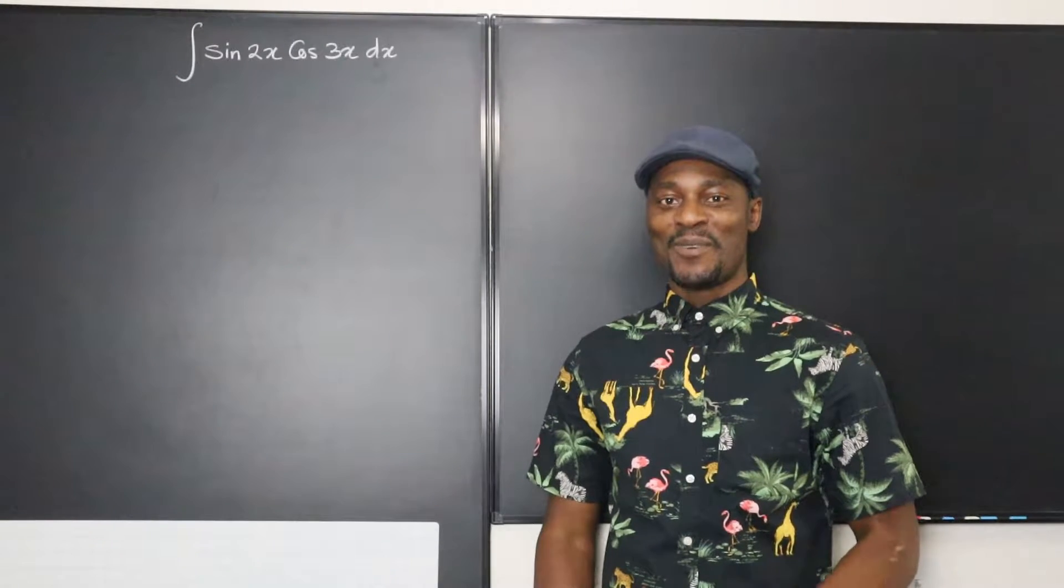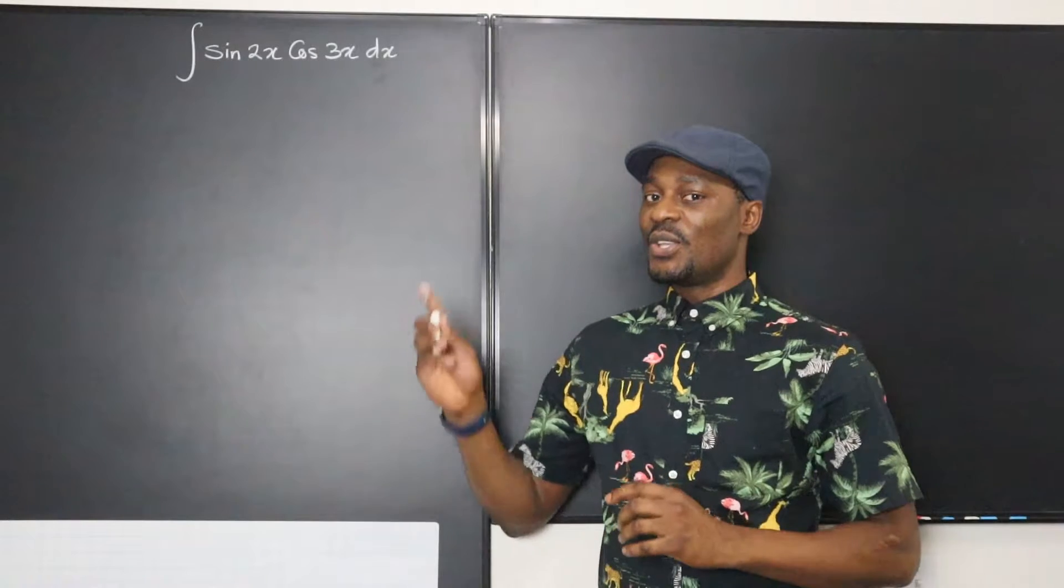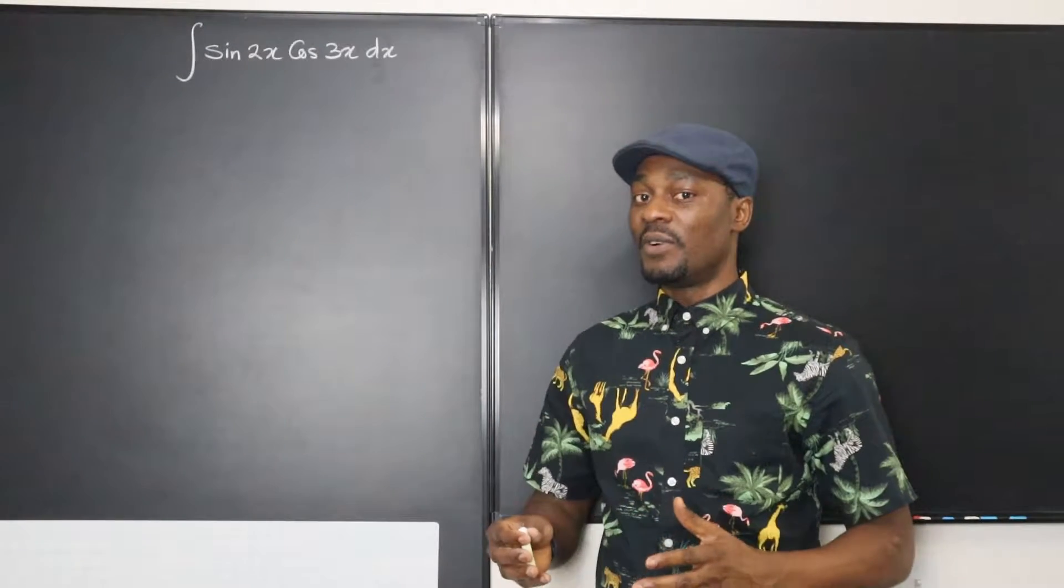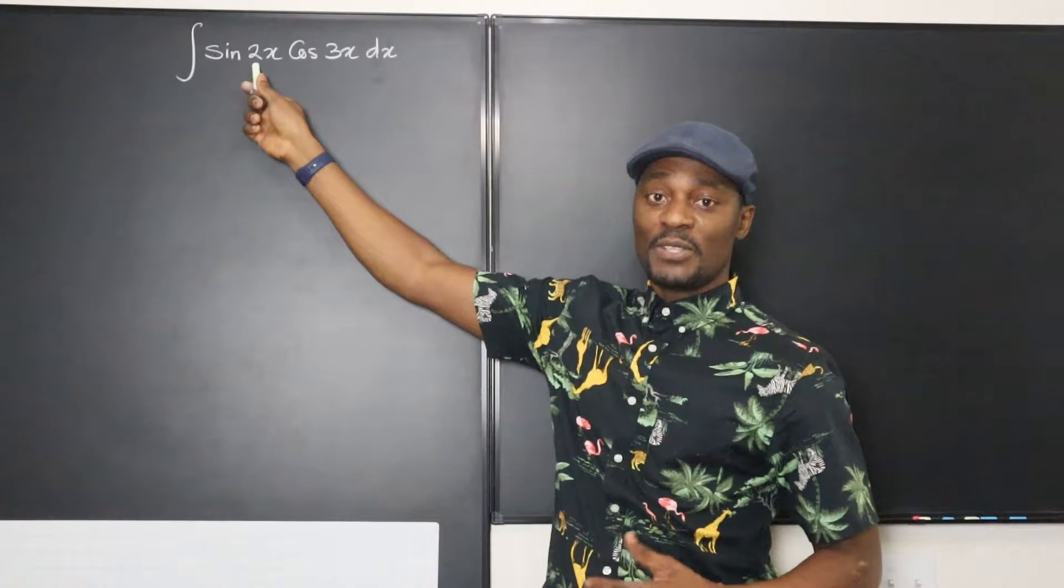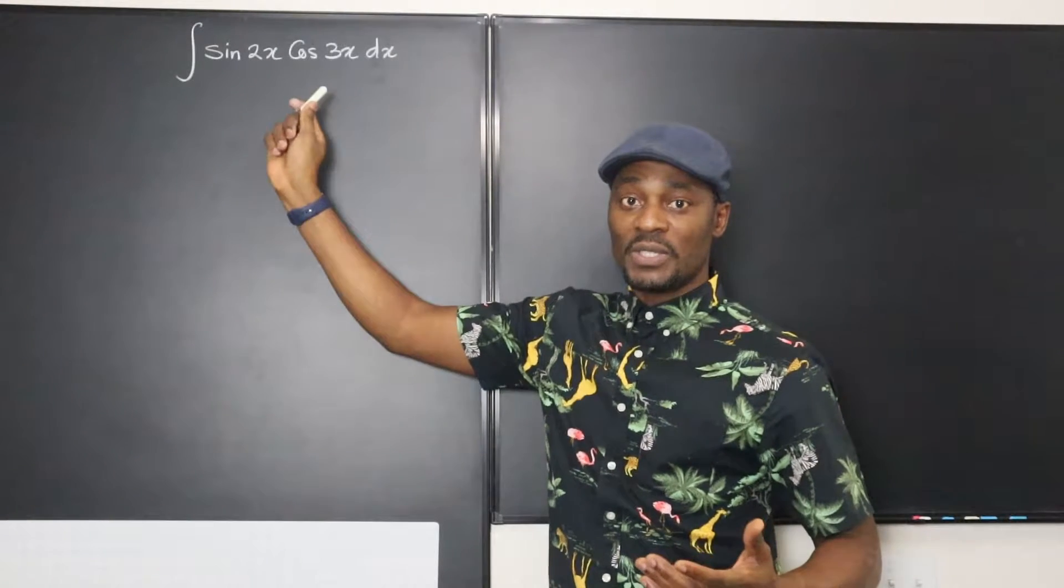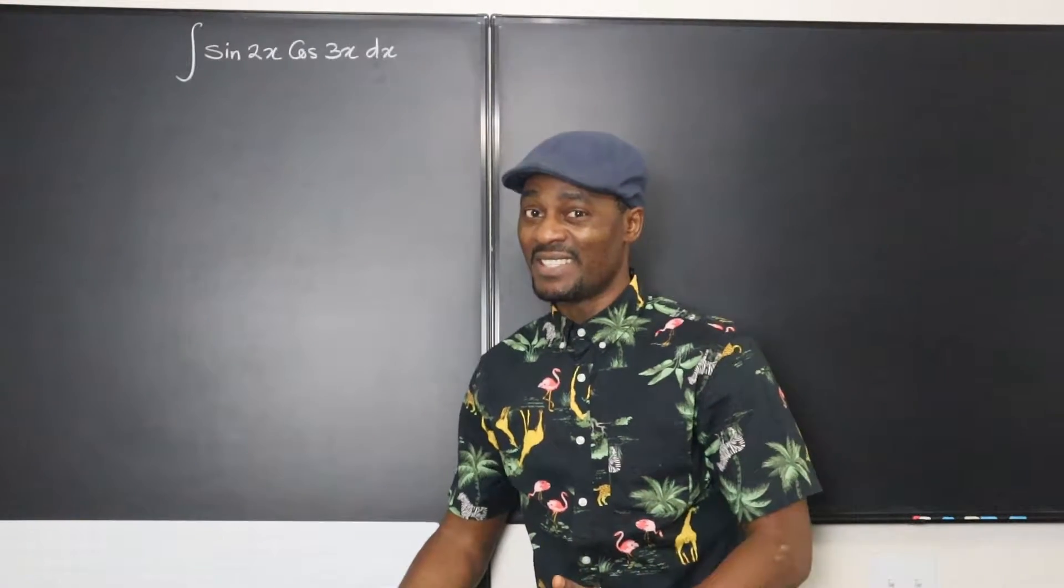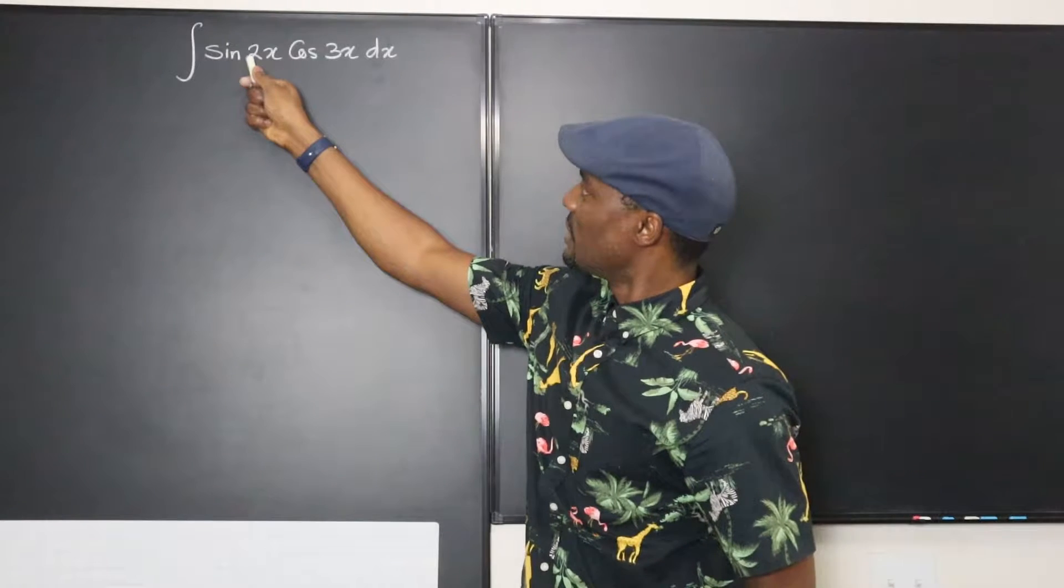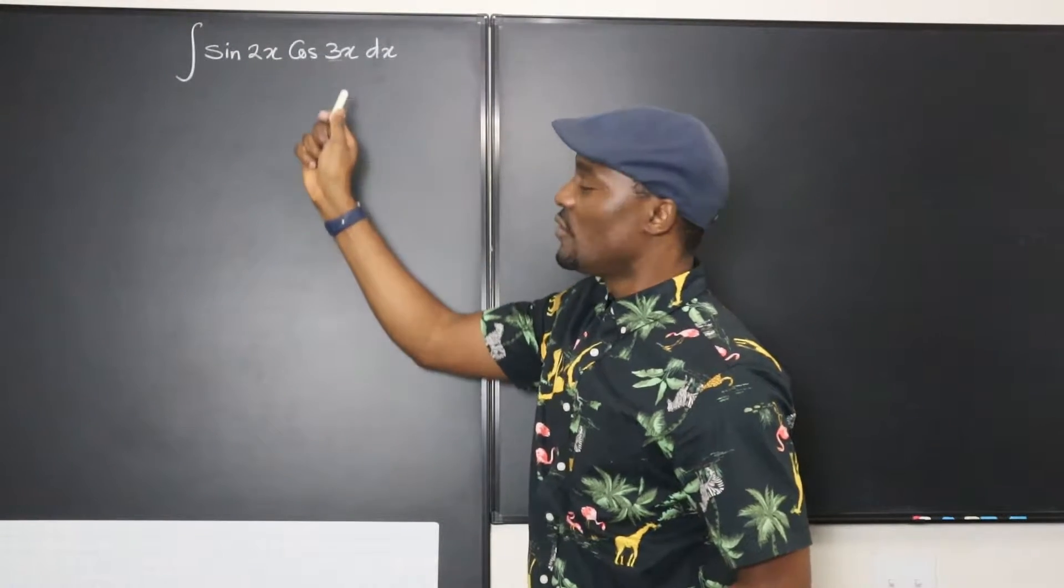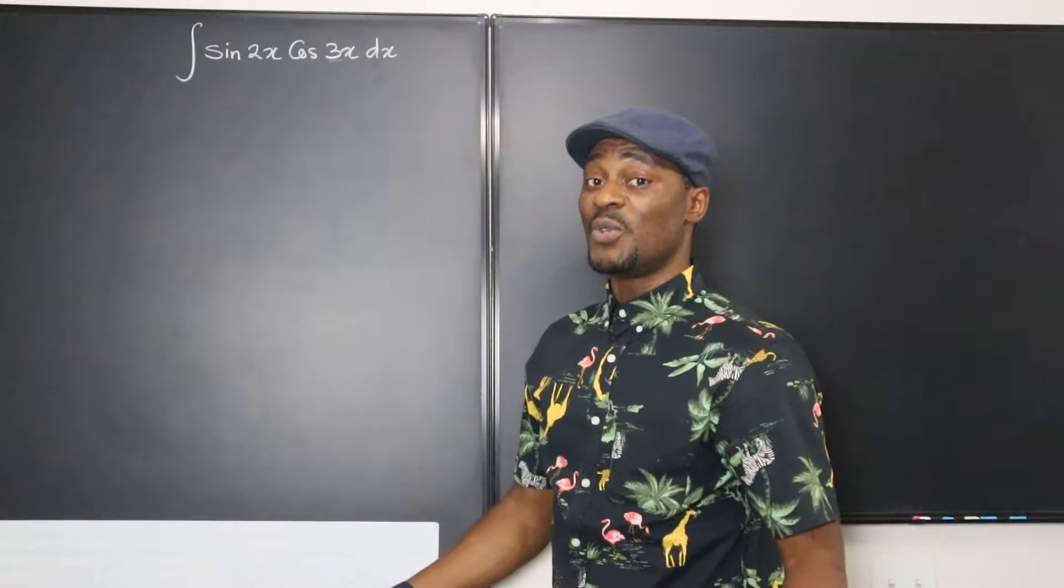Hello, welcome to another video. U substitution is beautiful when the arguments of the trig functions sine and cosine are the same, or tangent and secant are the same. But when you start seeing two different arguments, this has an argument of 2x and this is an argument of 3x, there's gonna be a major problem with your u substitution.